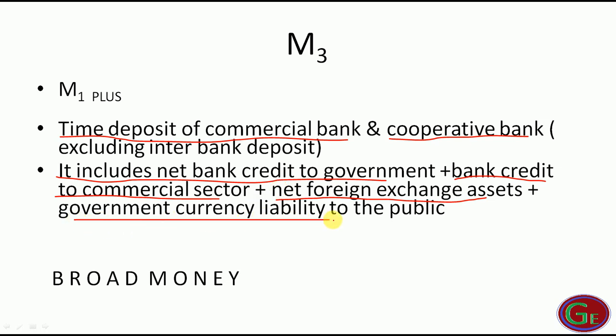This is all you add to M1 to get M3. M3 is known as broad money.